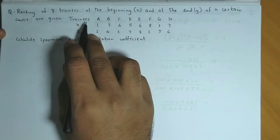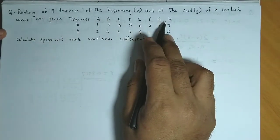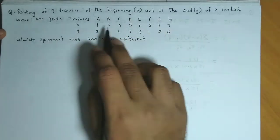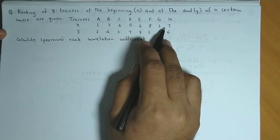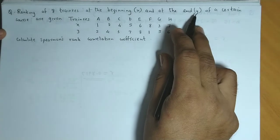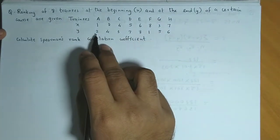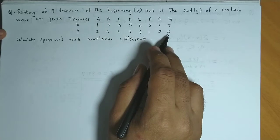So you have the trainees from A to H. The ranks at the beginning are given as 1, 2, 4, 5, 6, 8, 3, 7, and the ranking at the end of the training are given as 2, 4, 3, 7, 8, 1, 5, 6.